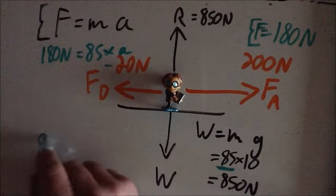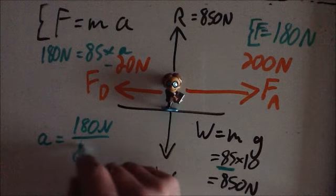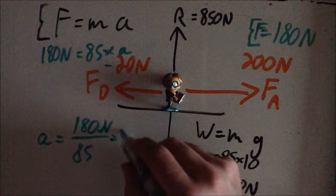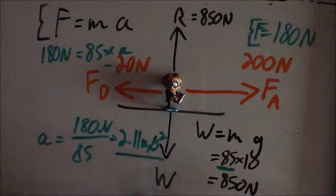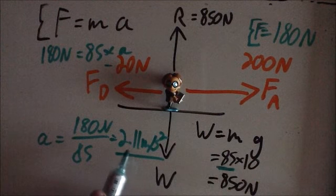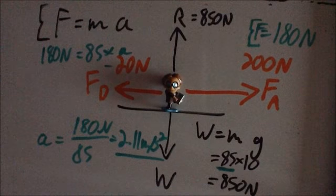we will have acceleration equals 180 newtons divided by 85, which equals 2.11 meters per second per second. So Science Nerd is going to start running and is going to initially accelerate at 2.11 meters per second per second.